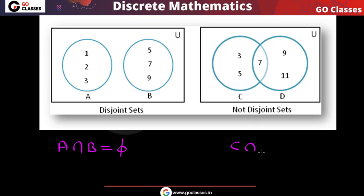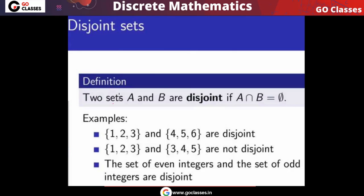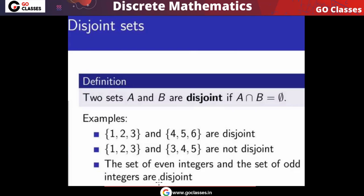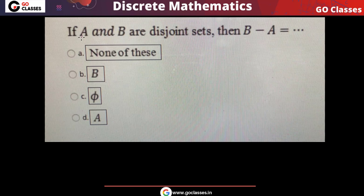What about C and D? They have the common element 7, so C ∩ D = {7}, which is not empty — so C and D are not disjoint. Similarly, {1,2,3} and {4,5,6} are disjoint sets, but {1,2,3} and {3,4,5} are not disjoint because their intersection is not empty. The set of even integers and the set of odd integers are disjoint.